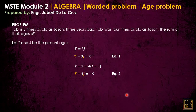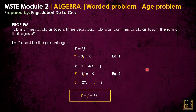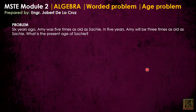Grab your calculator and we can solve the present ages of Toby and JSON with those values. What is asked here is the sum of their ages. That is just T plus J equals 36. That's it — the age problem is straightforward. Okay, another example.